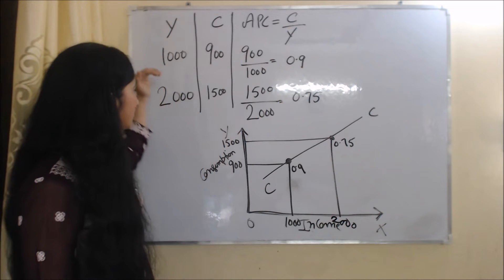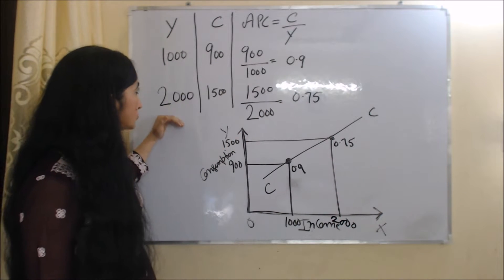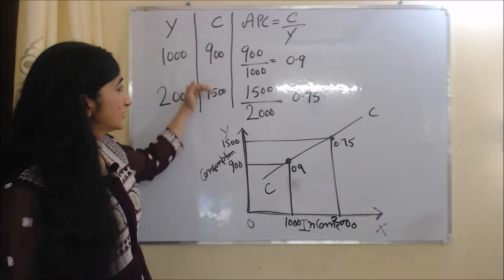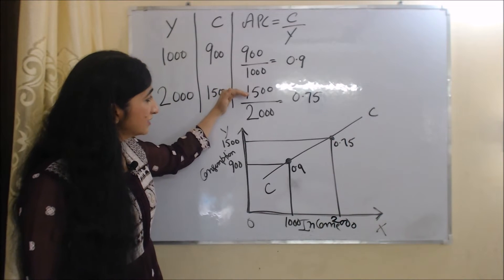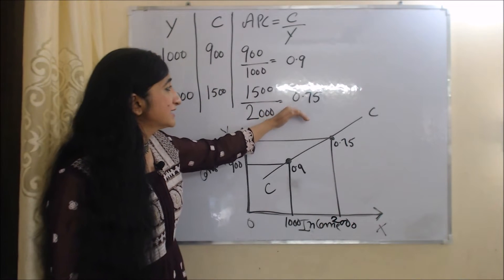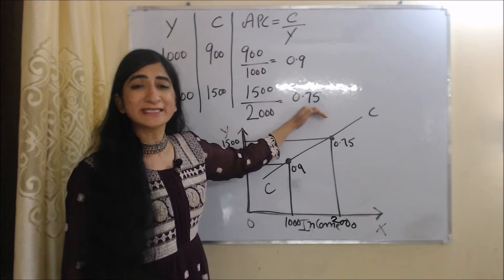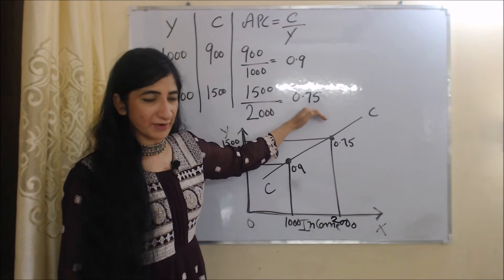When our income increases from 1,000 to 2,000, our consumption also increases from 900 to 1,500. 1,500 over 2,000 equals 0.75, so in the second case our APC is 0.75.